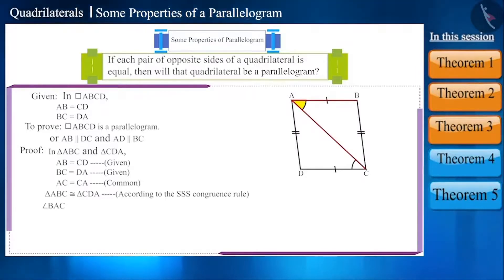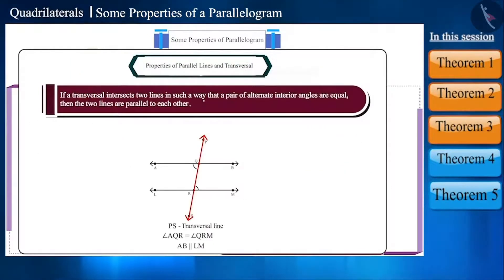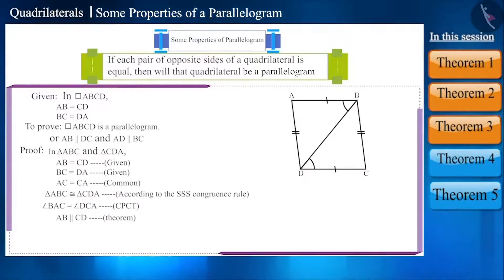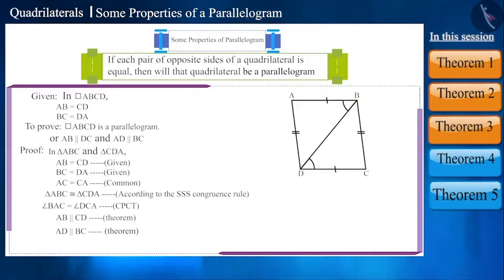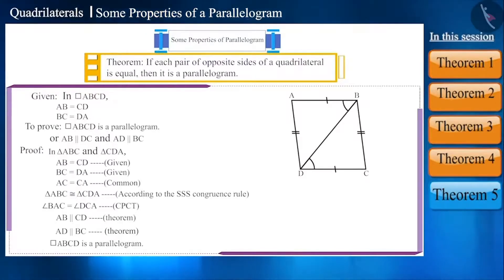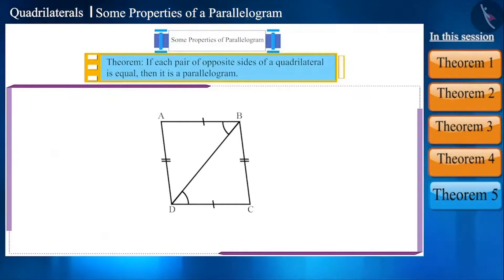Repeating the same process by drawing diagonal BD, we can prove side AD is also parallel to side BC. Now its opposite sides are parallel, therefore quadrilateral ABCD is a parallelogram. The theorem: if each pair of opposite sides of a quadrilateral is equal then it is a parallelogram. We now ask: can we say something about its opposite angles? Like opposite sides, will pairs of opposite angles also be equal?